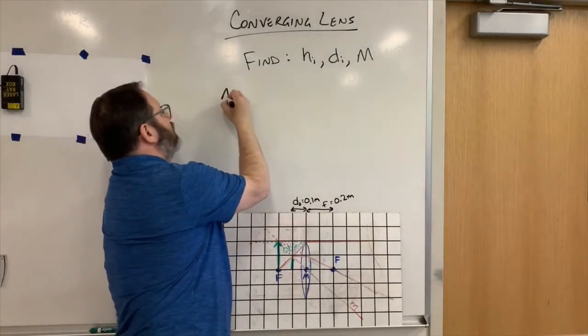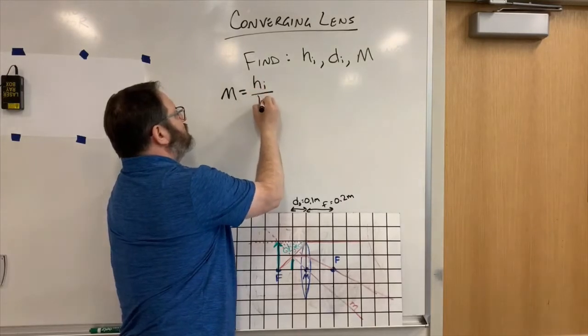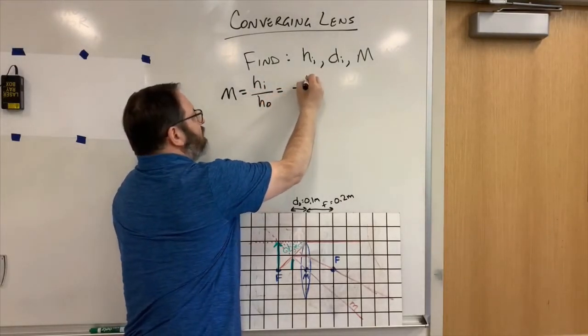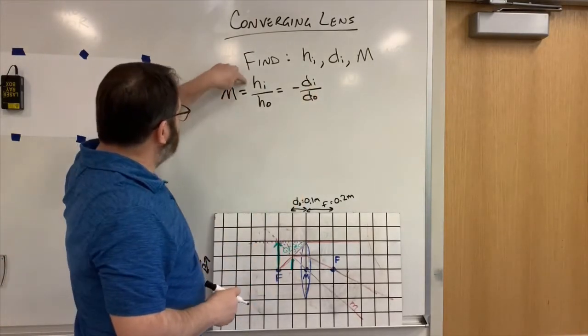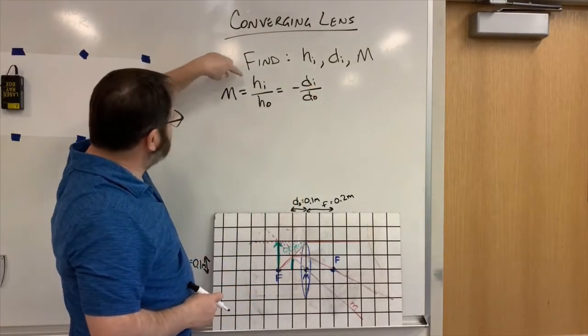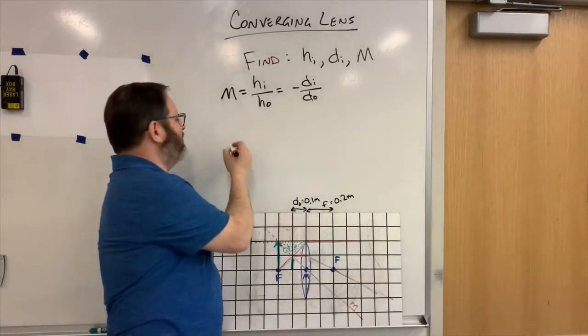So M is H image over H object, which is minus D for the image over D for the object. Let's see. I don't know M, H_i, or D_i right now, so this isn't going to help us, not yet.